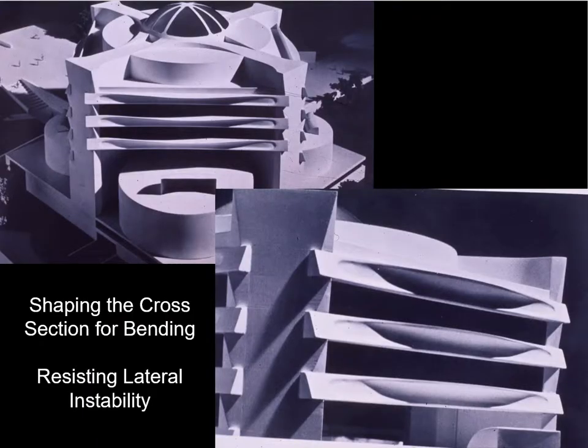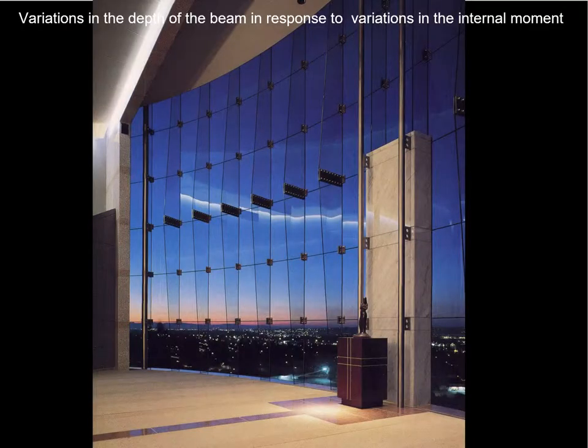If we want, we can be very sophisticated in manipulating the cross section of a beam to best address the stress distribution and stability issues, as shown in this beam where the top flange is made widest at the center, addressing both the force acting at the center and the issue of lateral stability. We can also change the depth of the beam along its length, giving it greater depth where the moment is greatest. In the case of these glass mullion beams backing up a wall, they are spanning from top to bottom, and we want to make them deep near the center of the span and shallower near the top and bottom support points.